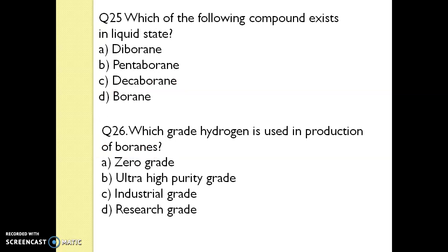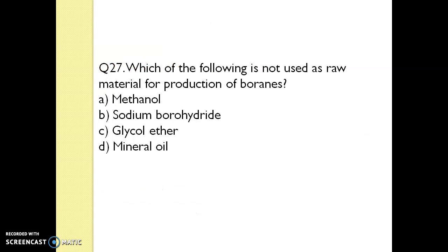Question 25. Which of the following compounds exists in the liquid state? Pentaborane exists in the liquid state. Question 26. Which grade of hydrogen is used in the production of boranes? The answer is industrial grade hydrogen. Question 27. Which of the following is not used as a raw material for the production of boranes? The answer is sodium borohydride.